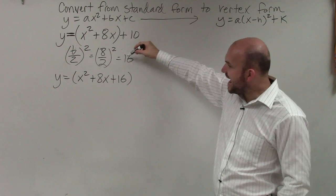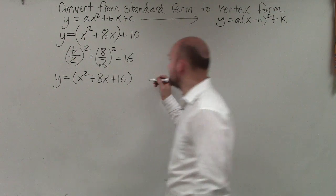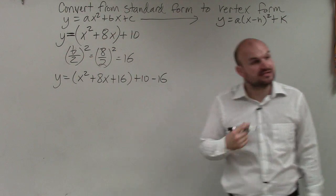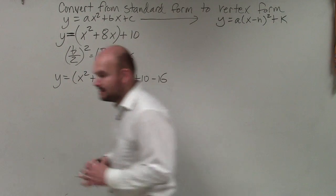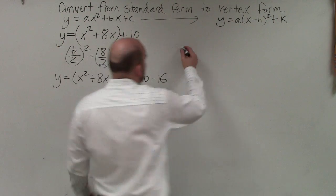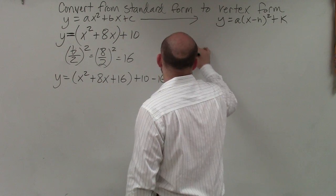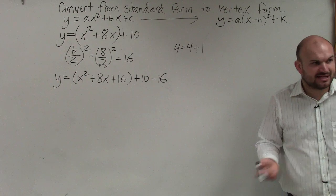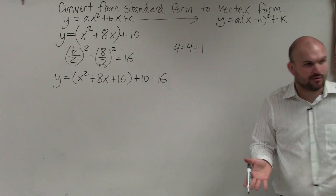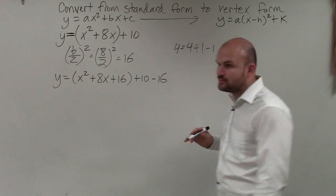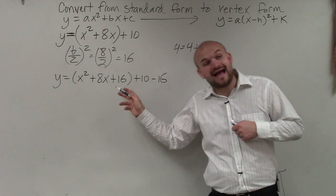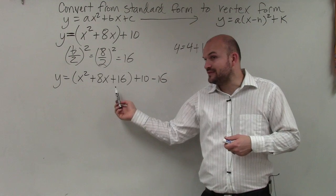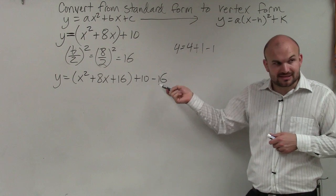Since I added 16 inside the parentheses, I'm going to have to subtract 16 outside the parentheses. This is very important for you guys to understand. Because if you have an equation, let's say 4 equals 4, if you add 1 onto one side of the equation, you can't just add 1 and say that the equation is still equal. So even though I'm adding 16 inside the parentheses, I'm also going to have to subtract 16.